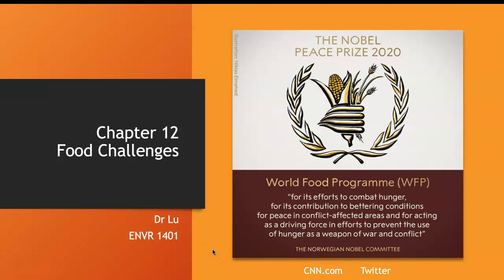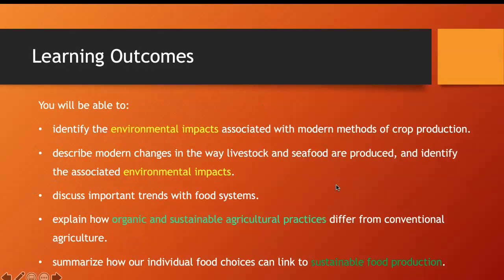In chapter 12 we're going to discuss food challenges and agricultural practices. This year the Nobel Peace Prize went to the World Food Program, and last year the Nobel Prize went to three scientists studying economics and fighting poverty. You can see that poverty and hunger are two big issues in this world.